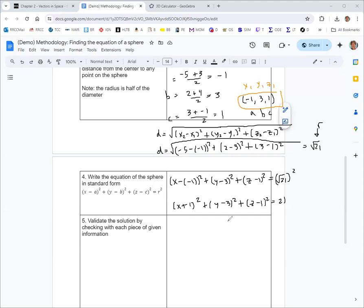To validate, I want to compare the solution, which is this equation, with the given information. In this problem, we were given two points, P and Q, were each on the sphere, so that means those coordinates should satisfy this equation. We can check each of those. P was (-5, 2, 3).